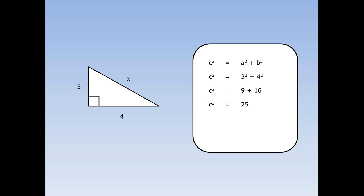But I don't want to know what c squared is — I want to know what c is. So I'm going to square root both sides, and I find that c equals the square root of 25. The square root of 25 is 5, so the hypotenuse is equal to 5.